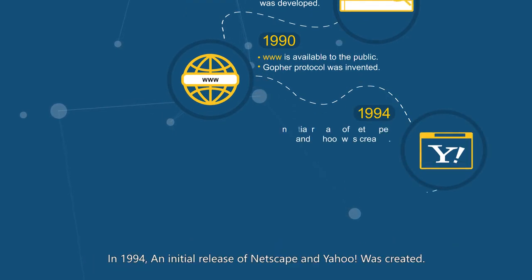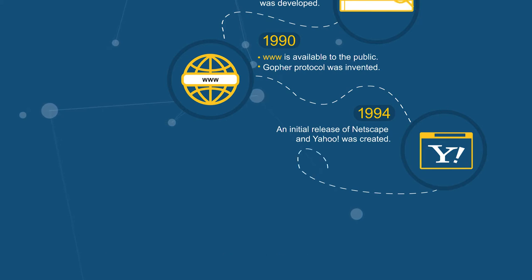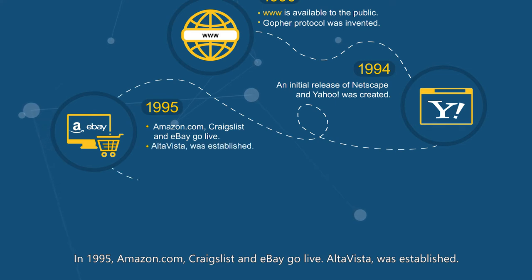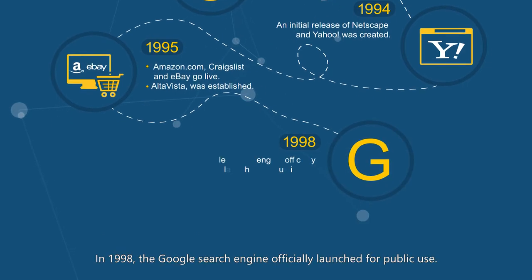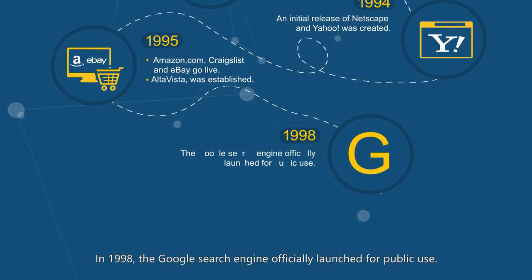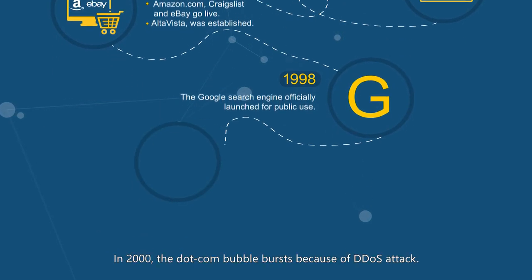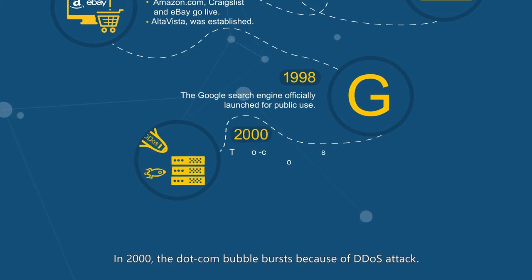In 1991, the WWW became available to the public and the Gopher protocol was invented. In 1994, the initial release of Netscape and Yahoo was created. In 1995, Amazon.com, Craigslist, and AltaVista were established.